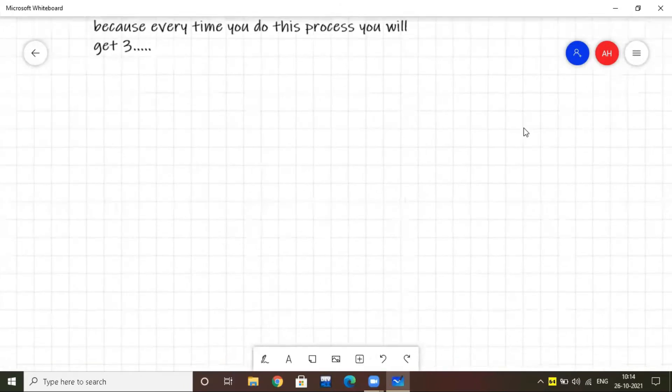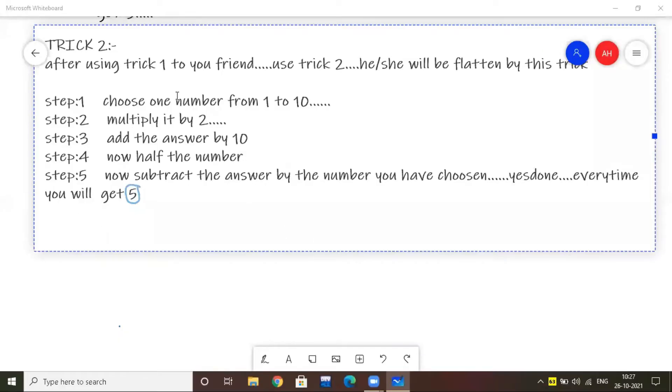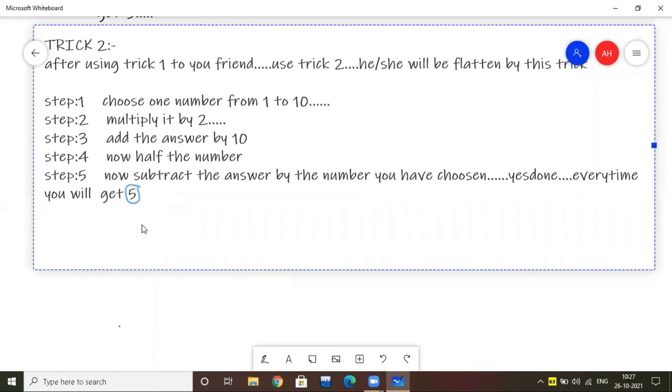Okay, now trick 2. Step 1: choose a number from 1 to 10. Step 2: multiply it by 2. Step 3: add the answer by 10. Step 4: now half the number. Step 5: now subtract the answer you have got in step 4 from the number you have chosen before.